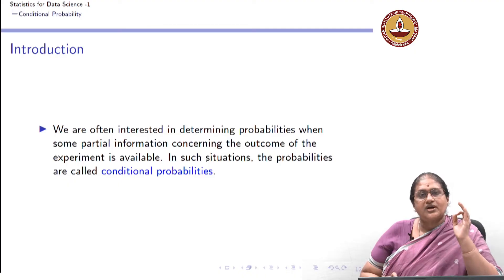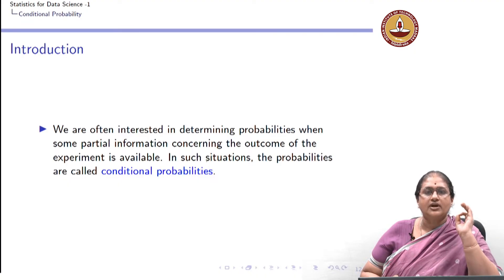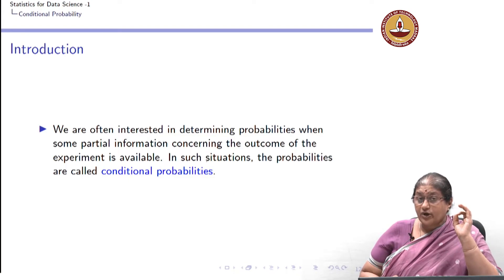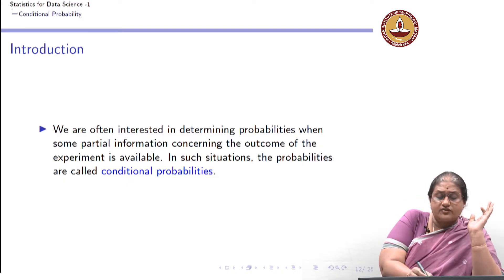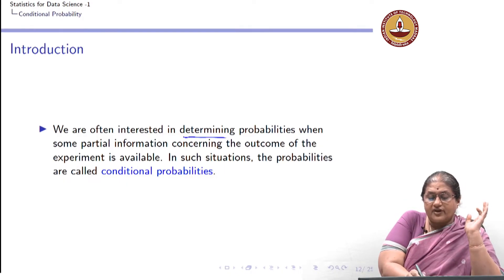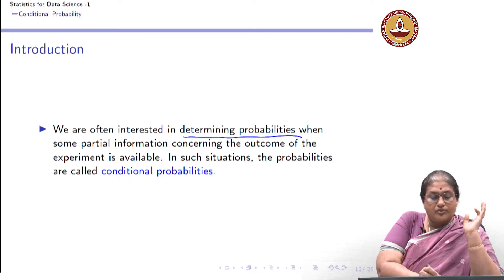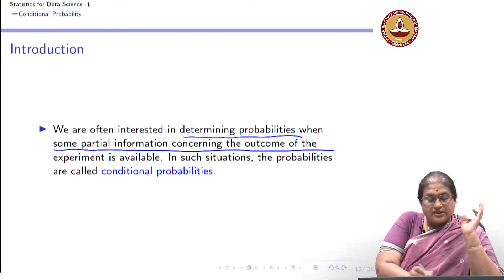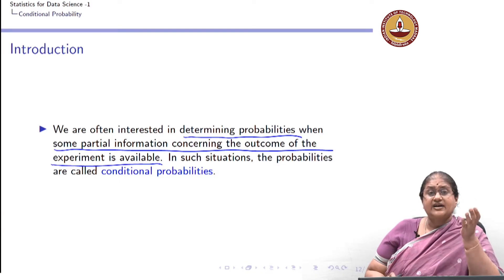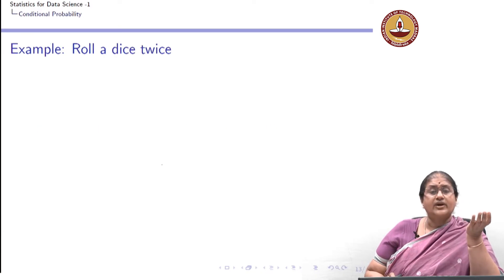Now let us introduce the notion of conditional probability. Why do we have to learn about conditional probability? Because most of the times we are interested in determining probabilities when some partial information concerning the experiment is available. Let us understand it through an example.